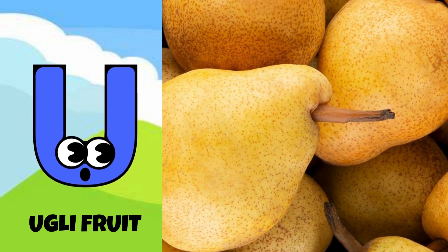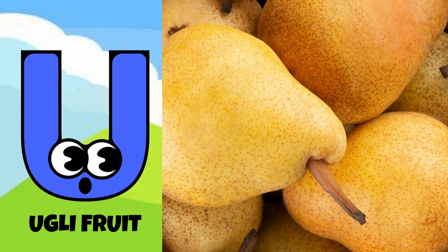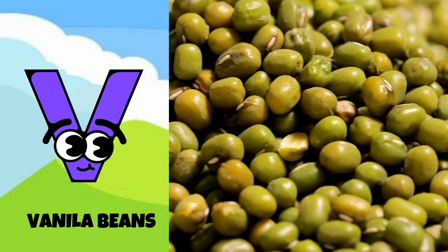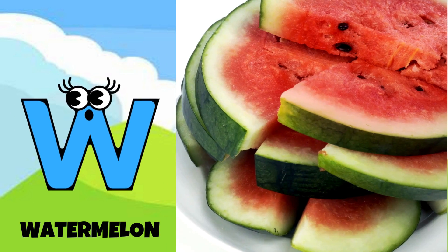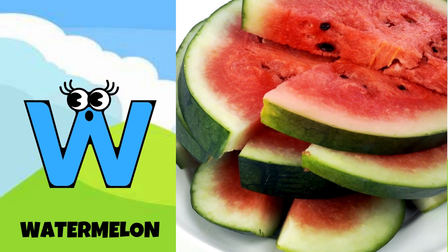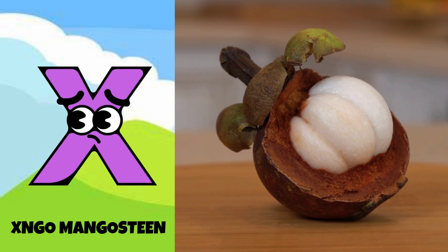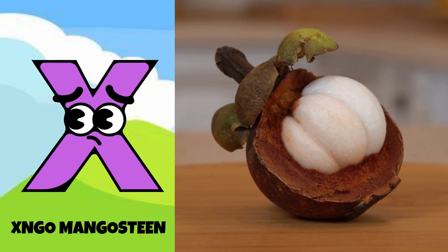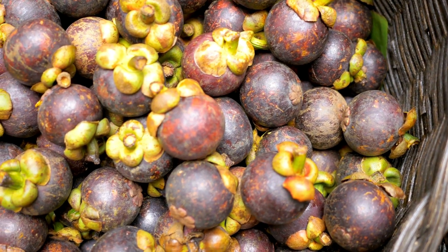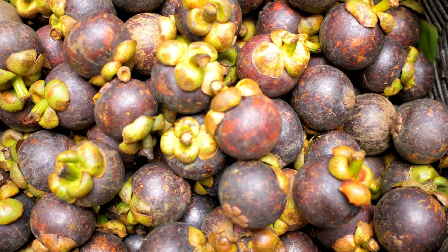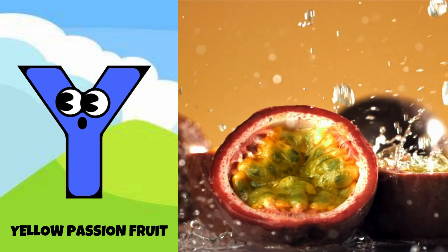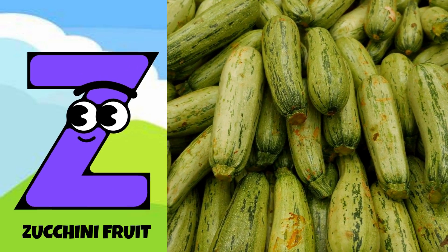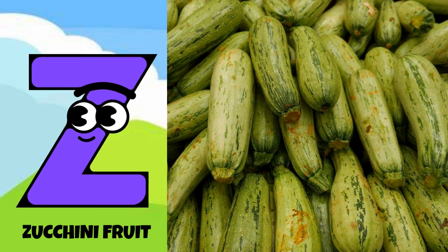U is for ugly fruit, u-u-ugly fruit. V is for vanilla beans, v-v-v-vanilla beans. W is for watermelon, w-w-w-watermelon. X is for xanthomangosteen, x-x-xanthomangosteen. Y is for yellow passion fruit, y-y-y-yellow passion fruit. Z is for zucchini fruit, z-z-z-zucchini fruit.